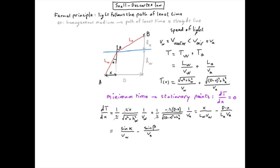Equating this derivative to 0 gives... Multiplying on both sides by the speed of light in vacuum c and defining the refractive index n as a ratio of c over the speed of light in the medium, we obtain the famous Snell-Descartes law.